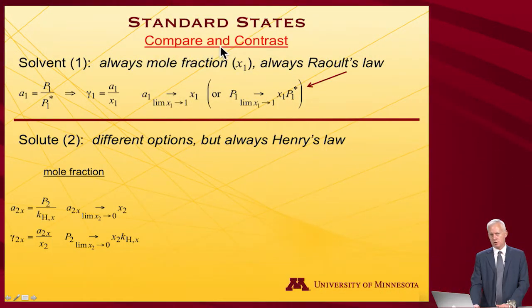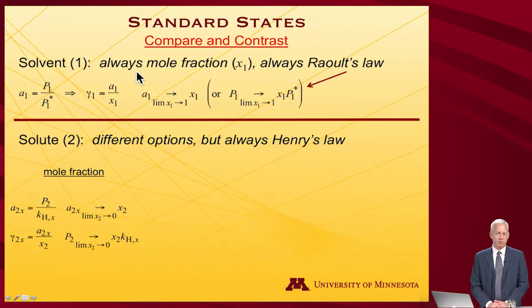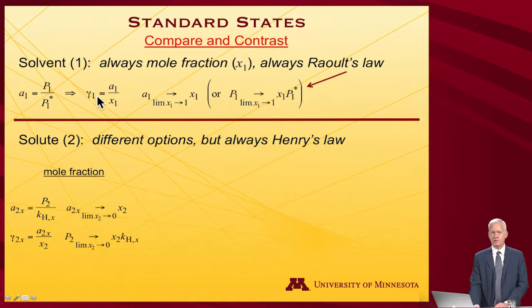In this video, let's take a look at how different choices of concentrations lead to different effects on standard states. When we consider a solvent — which I'll always call component 1, because it's the one that is most nearly pure — it follows Raoult's law as it comes closer to its pure component vapor pressure. The activity is the observed vapor pressure divided by the pure component vapor pressure, and the activity coefficient is the activity divided by the mole fraction. Raoult's law says that in the limit as mole fraction goes to 1, the activity goes to the mole fraction.